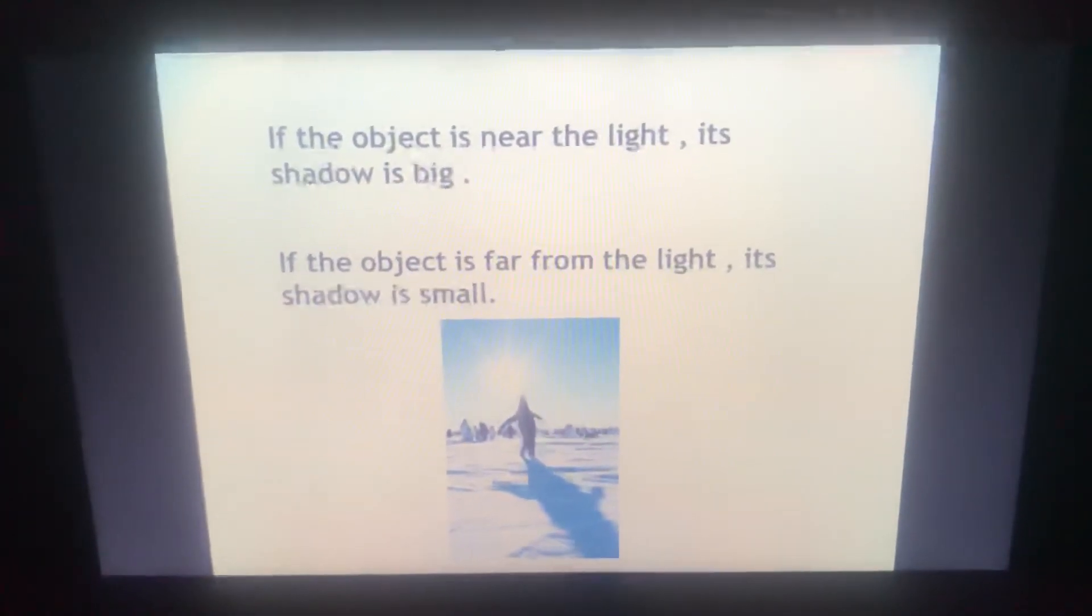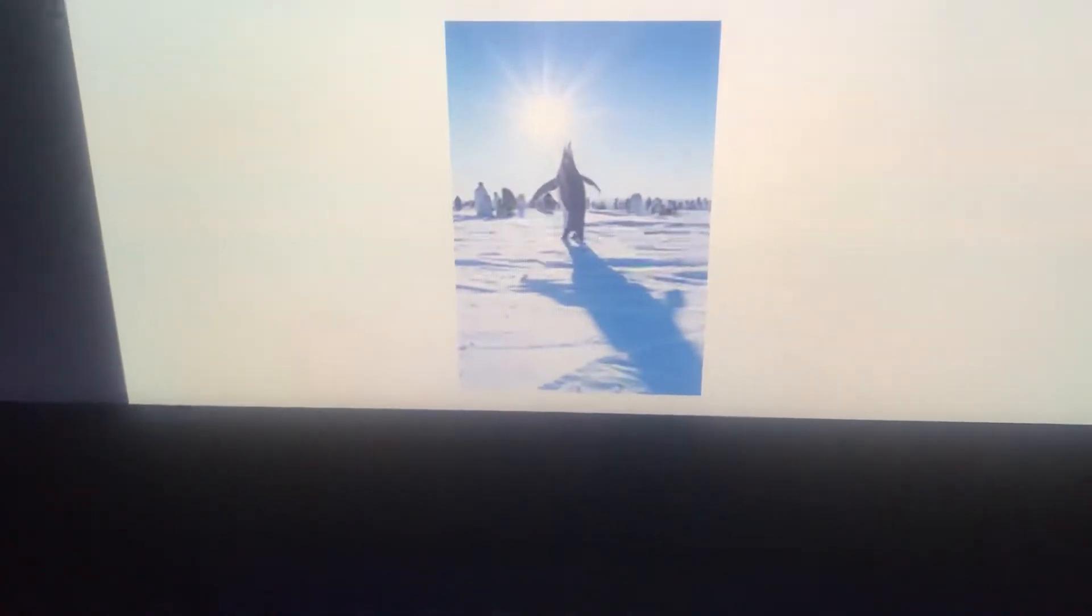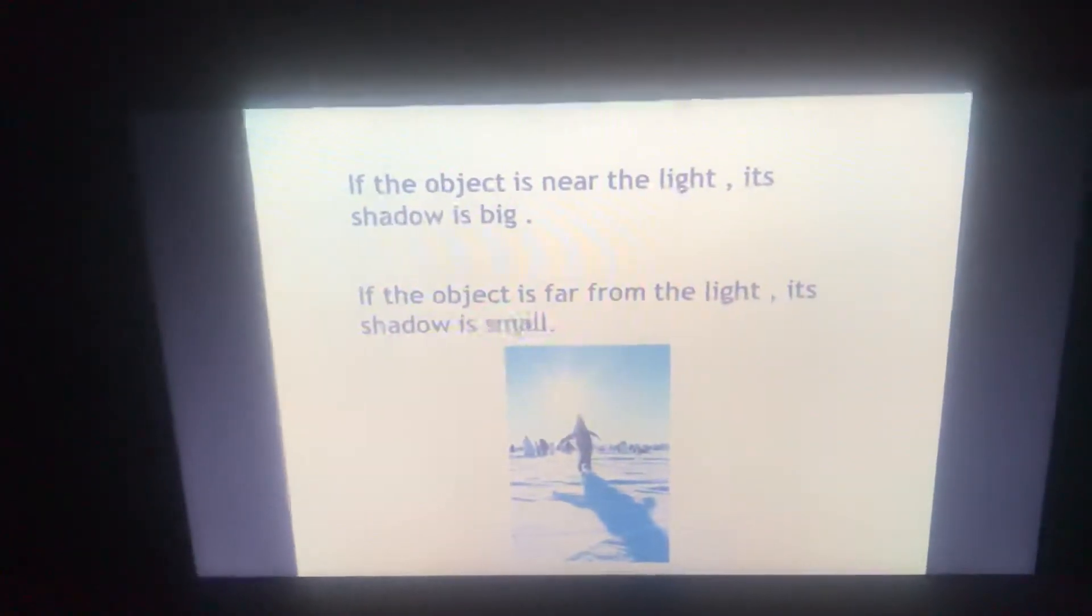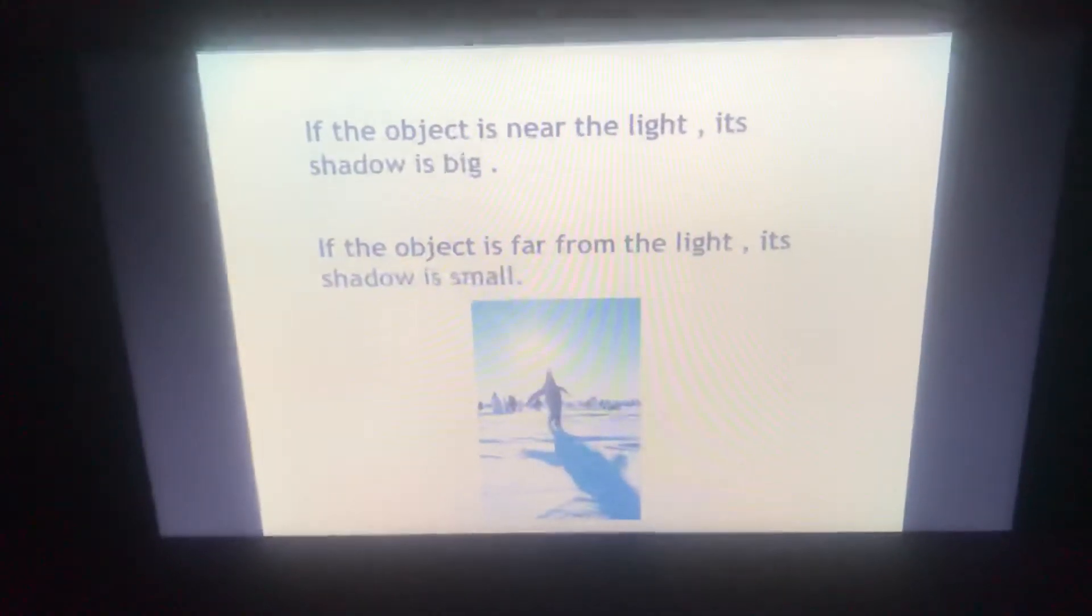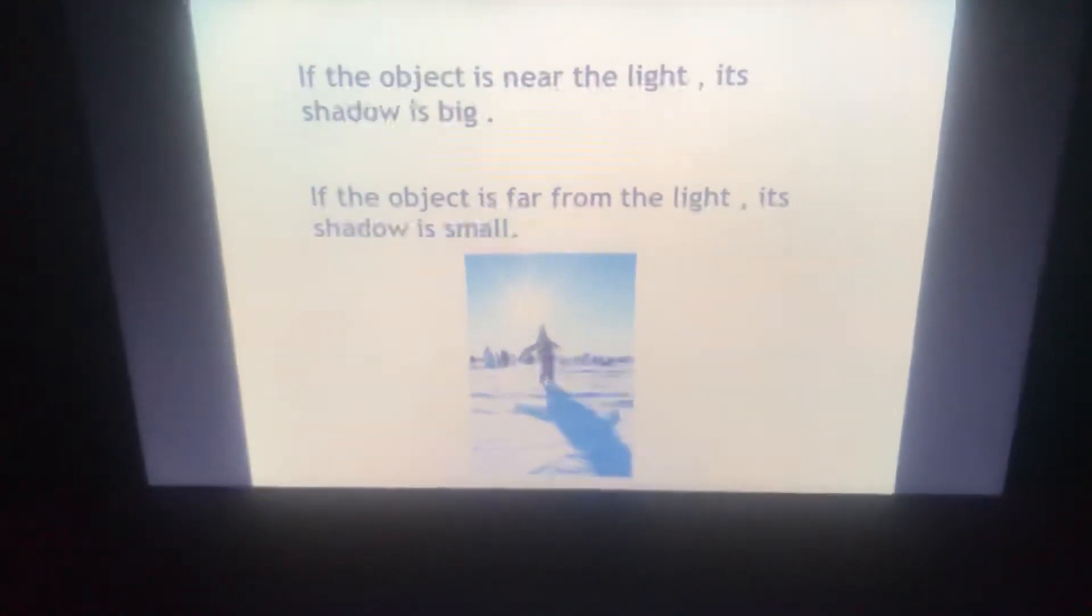If the object is near the light, its shadow is big. Look here. If the object is near the light, its shadow is big. If the object is far from the light, its shadow is small.